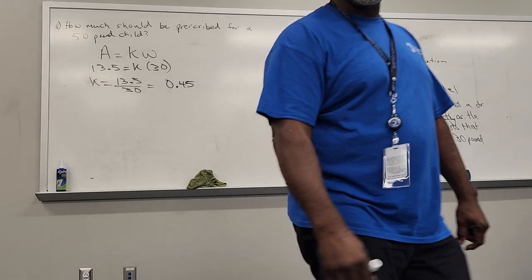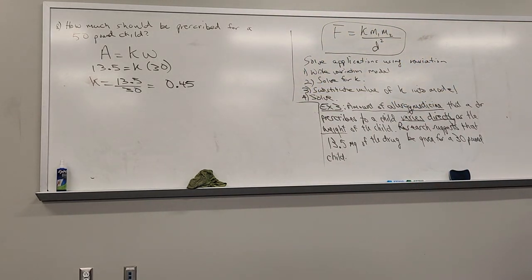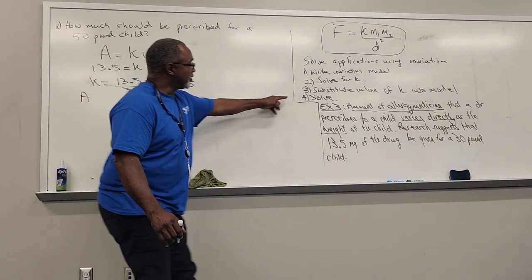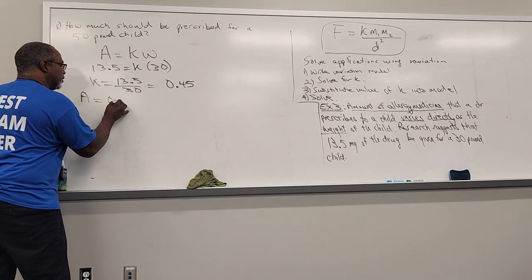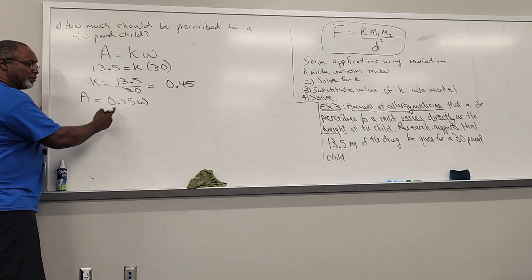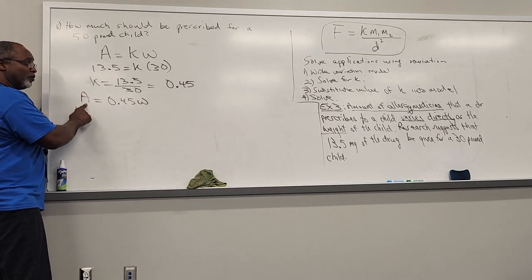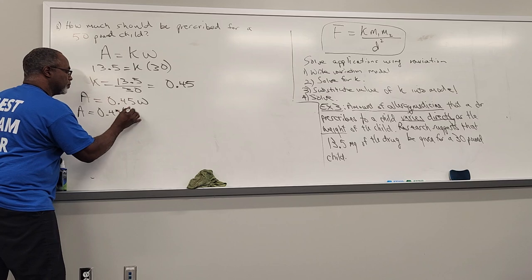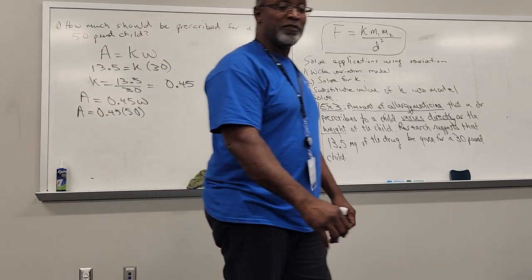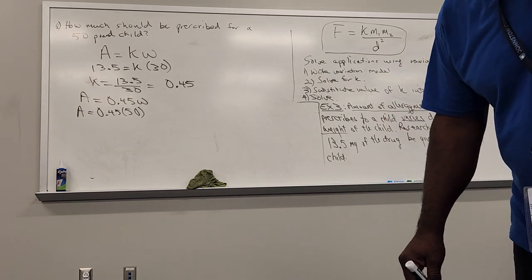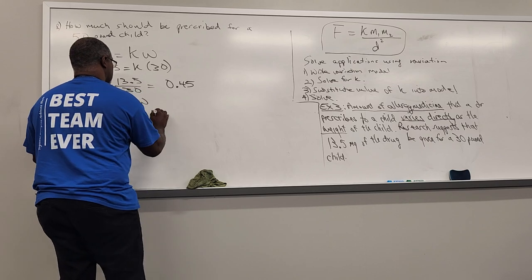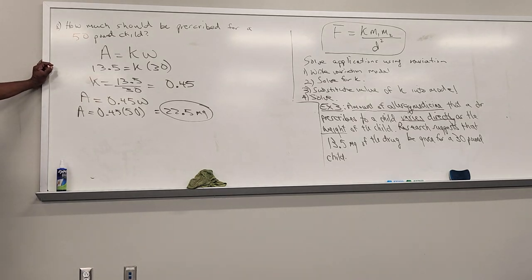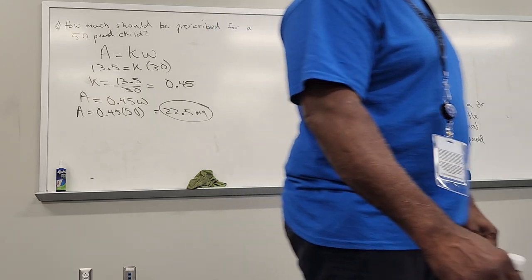Now that we know k is 0.45, step three: substitute k into the model, giving A equals 0.45 times W. Step four: for a 50-pound child, A equals 0.45 times 50, which gives 22.5 milligrams. So it takes 22.5 milligrams of allergy medicine for a 50-pound child.